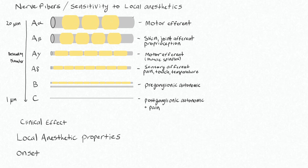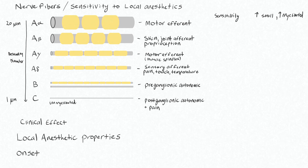A large nerve fiber is more difficult to penetrate, so in general larger nerve fibers are less sensitive — sensitivity increases with smaller nerve fibers. Even more significant is the myelination status: myelinated neurons are much more sensitive. This means that C fibers, even though they're the smallest by far, are unmyelinated, and because of this they tend to not actually be all that sensitive to local anesthetics. In general, C fibers are relatively resistant to local anesthetics, as are the A alpha fibers being the largest.